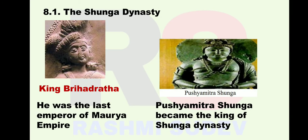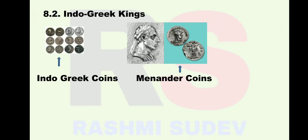8.1 The Shunga Dynasty: After Emperor Ashoka, Maurya power started decreasing. The last Maurya emperor was Brihadrata. The Maurya general Pushyamitra Shunga fought and killed Brihadrata and became the king, founding the Shunga Dynasty. 8.2 Indo-Greek Kings: The Greek kings who ruled the northwest of the Indian continent were known as Indo-Greek kings.